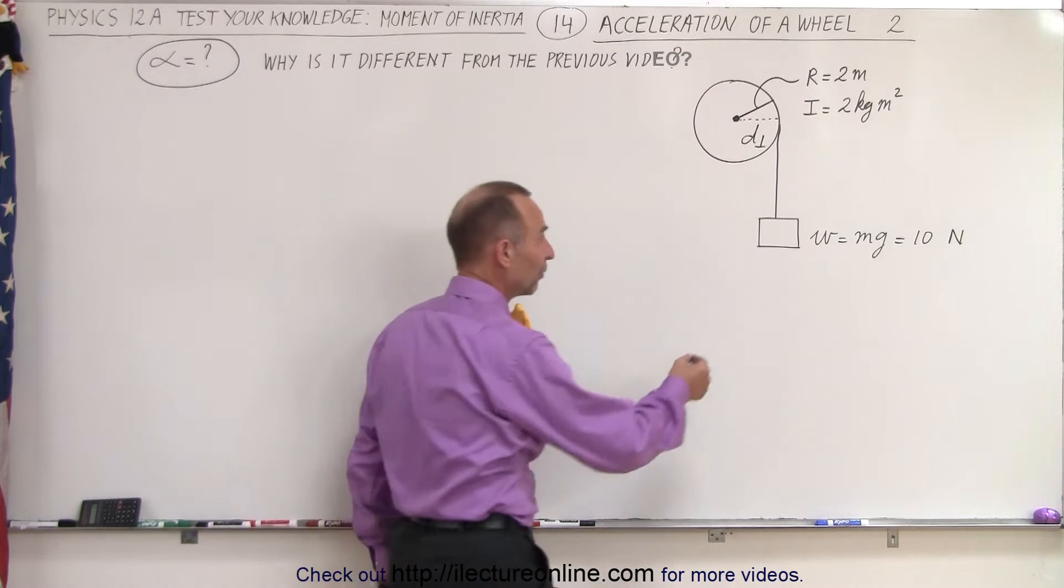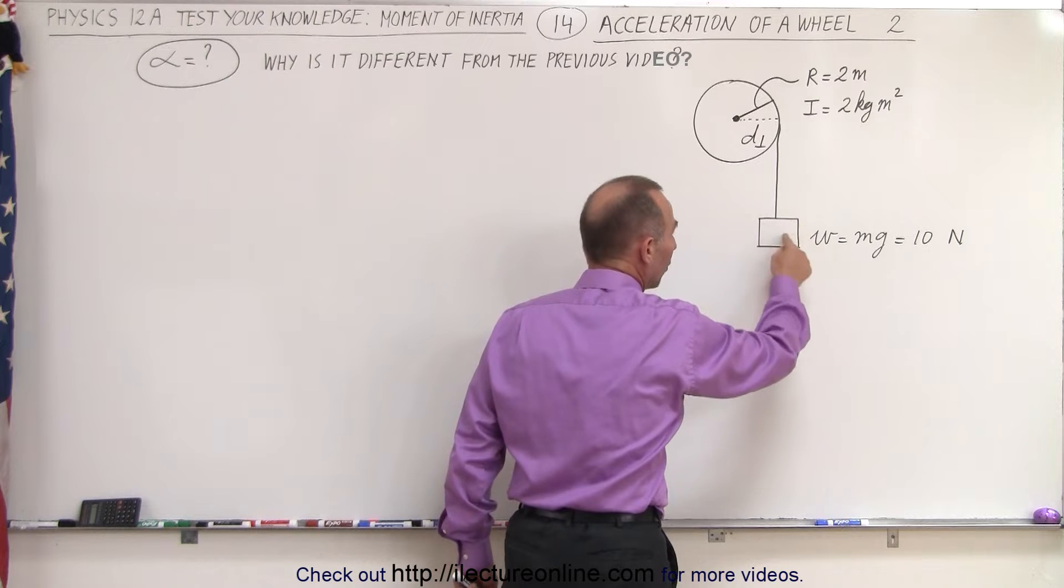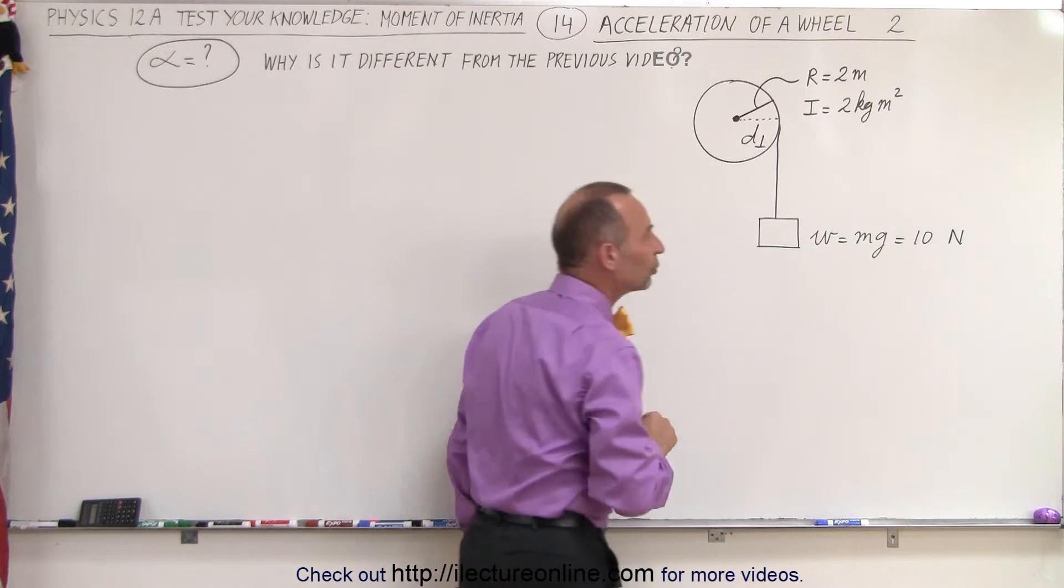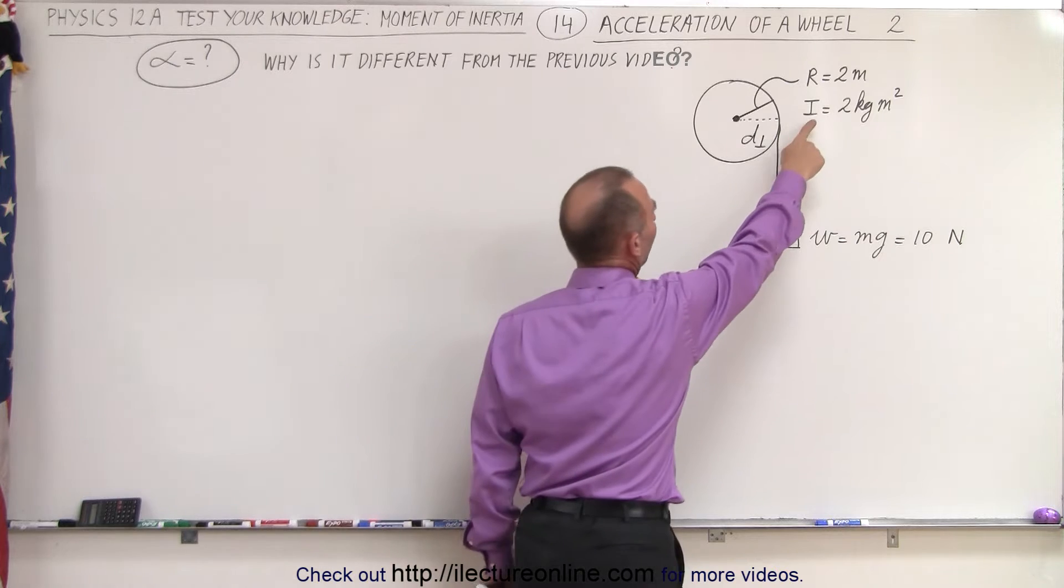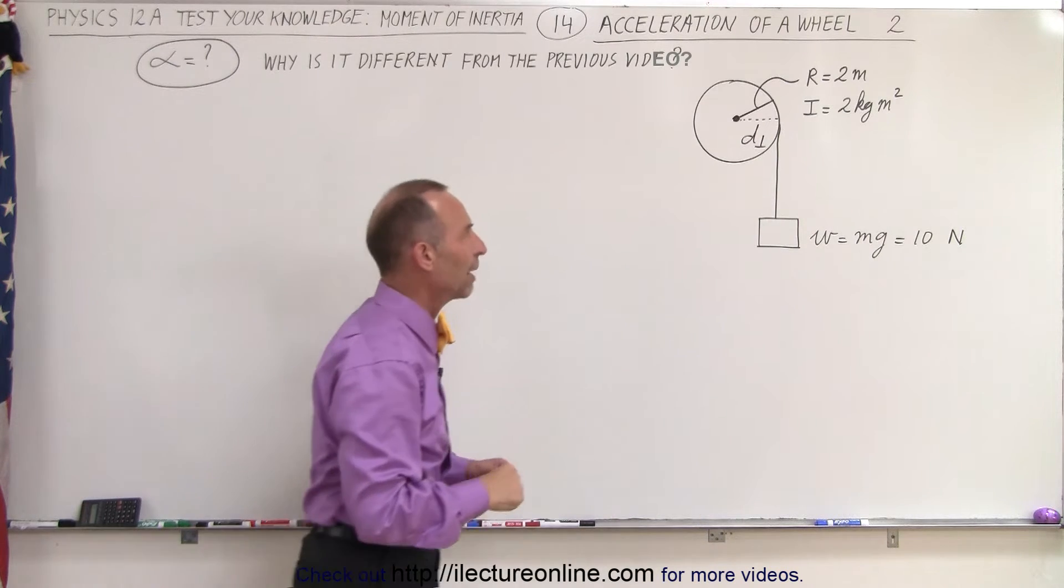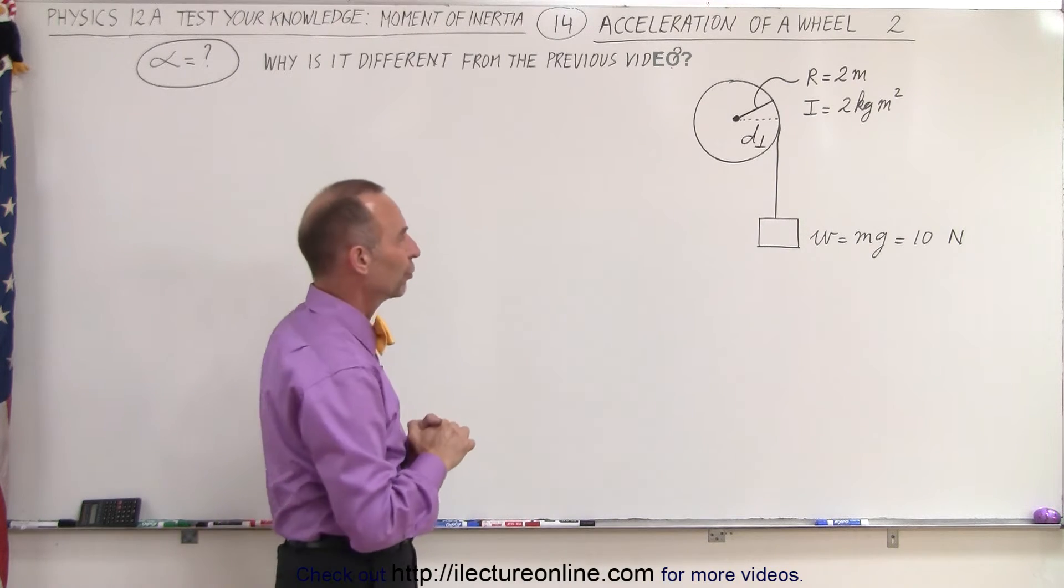The only difference is that instead of applying a force of 10 newtons, we hang a weight equal to 10 newtons from the string which is wrapped around the disc, which has a moment of inertia of 2 kilogram meters squared and a radius of 2 meters.